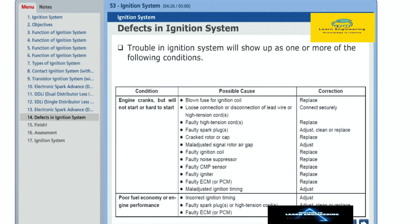Trouble in ignition system will show up as one or more of the conditions such as engine cranks but does not start or hard to start, poor fuel economy or poor engine performance. The table illustrates the condition, possible causes and correction needed for these troubles.